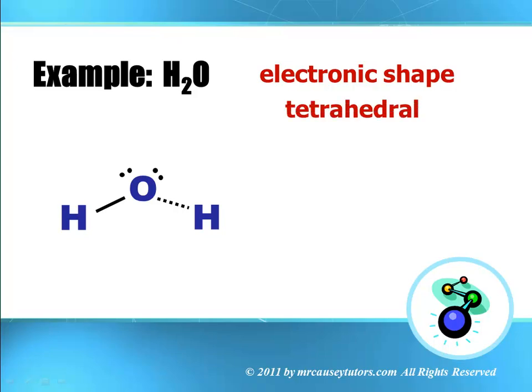The electronic shape, of course, is tetrahedral. It has four electronic regions, bonds and electrons. But molecular shape? If you cancel out looking at those unbonded electrons, you get angular.